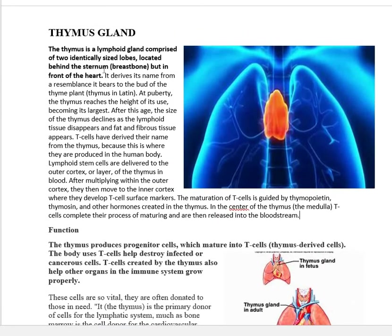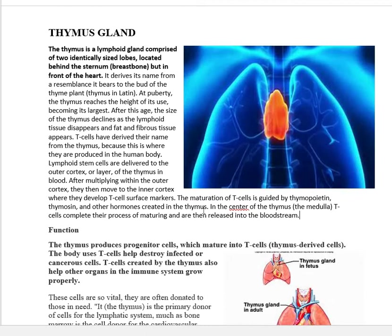Next is the thymus gland. The thymus gland is a lymphoid gland comprised of two identically sized lobes located behind the sternum (breast bone), in front of the heart. The maturation of T cells is guided by thymopoietin, thymosin, and other hormones created in the thymus. In the center of the thymus, T cells complete their maturation process and are then released into the bloodstream.